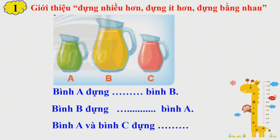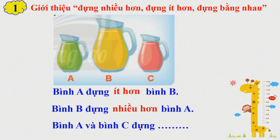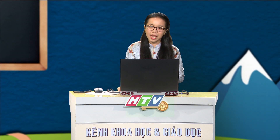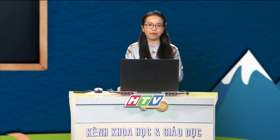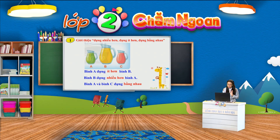Mời các em thực hiện vào giấy. Sau khi thực hiện xong, chúng ta có thể dễ dàng nhận thấy bình A sẽ đựng ít hơn bình B. Bình B đựng nhiều hơn bình A. Và bình A, bình C đựng bằng nhau. Các vật chứa nước mà có hình dạng như nhau, để so sánh xem vật nào chứa được nước nhiều hơn, ít hơn hay bằng với vật kia thì chúng ta không cần phải thực hiện thao tác đổ nước. Mà các em có thể quan sát độ lớn của vật: vật lớn thì chứa nước nhiều hơn, vật nhỏ sẽ chứa nước ít hơn, và nếu 2 vật có hình dạng độ lớn như nhau thì sẽ chứa nước bằng nhau.